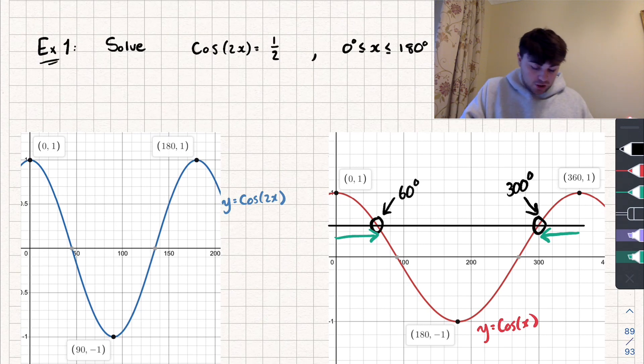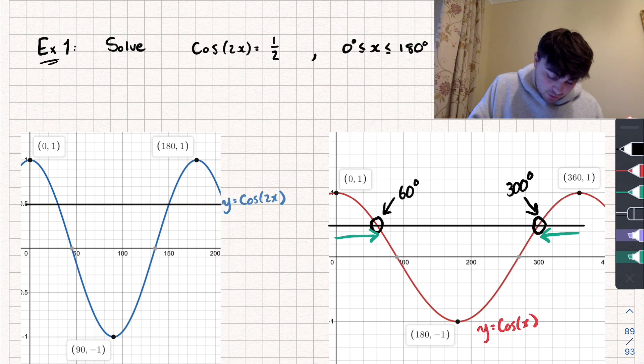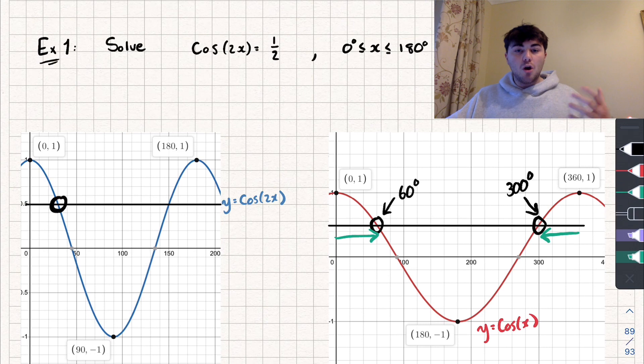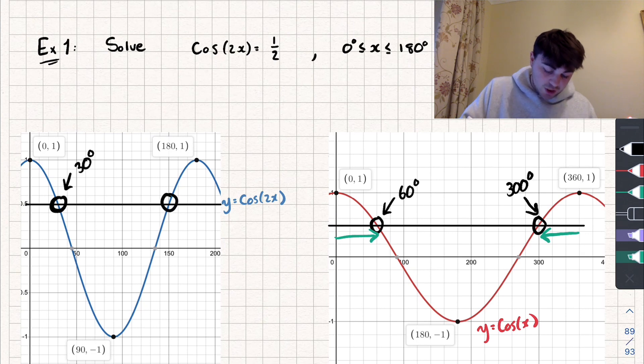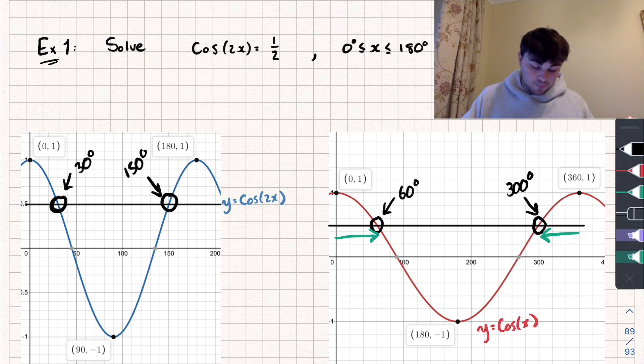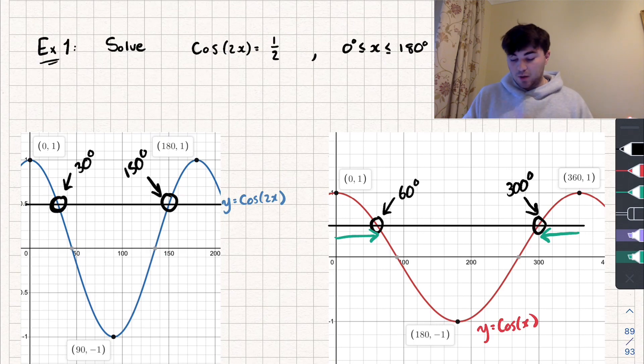So the first solution, so that would be if I draw another line on this one. So we're looking at this intersection here. Well, if it was 60 on cosine of x, on cosine of 2x, we're going to divide it by 2, and we find that it's going to be 30 degrees. And by the same logic, the second solution, rather than 300 degrees, it's going to be divided by 2, and it's going to be 150. And it also kind of makes sense, because if we know that cos of 60 equals 1 half, well, cos of 2 times what takes me to 1 half? Well, cos of 2 times 30. So hopefully you can think of it that way as well, if it helps.